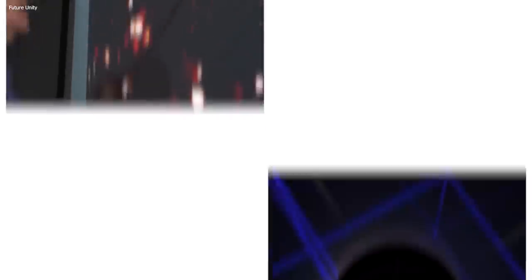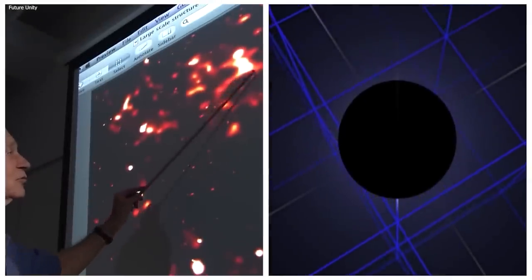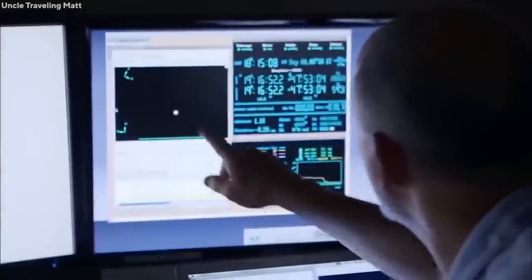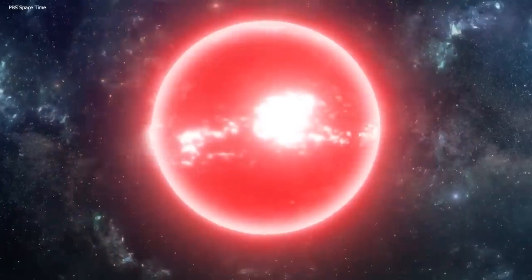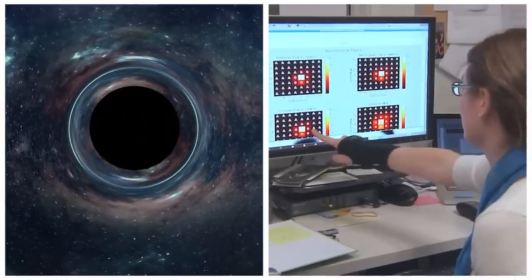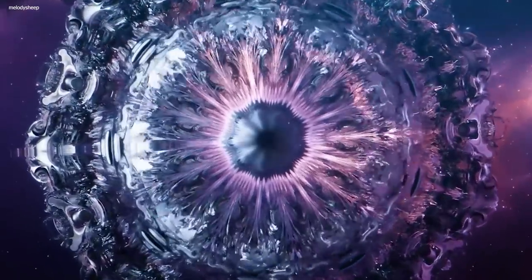So how do scientists detect these black holes? These things don't emit any light, so you can't just point your telescope in their direction and snap a photo. In fact, detecting black holes is a real challenge, but scientists have found a way to improvise and infer their presence by observing their effect on other matter nearby.